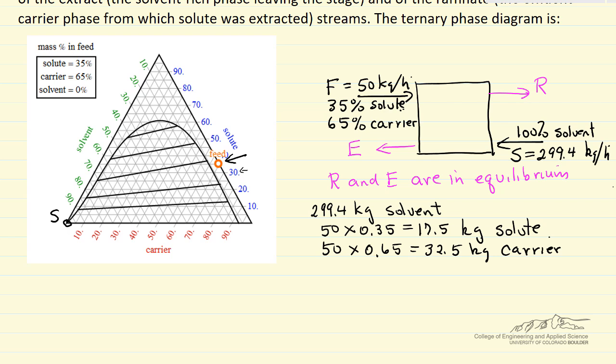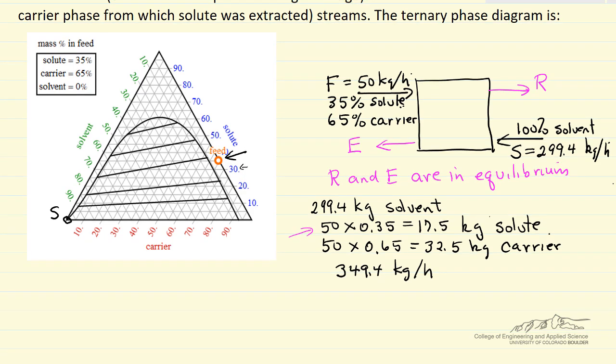As you can see here, I took the flow rate of the feed stream, multiplied by the mass fraction, that's 35% solute, to determine the number of kilograms of solute, likewise number of kilograms of carrier. Add these three streams together, and it says the total is 349.4 kilograms per hour that's going into the system, so these are all kilograms per hour also.